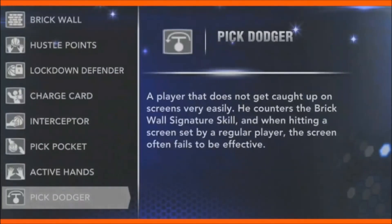One of the new signature skills we created on the defensive side is Pick Dodger. He's a guy that doesn't get caught up on screens easily. We have different resolutions when a player hits a screen—he can go around it or under it, but sometimes he gets clobbered. A Pick Dodger has an easier time going over or around screens and can keep up with the ball better.